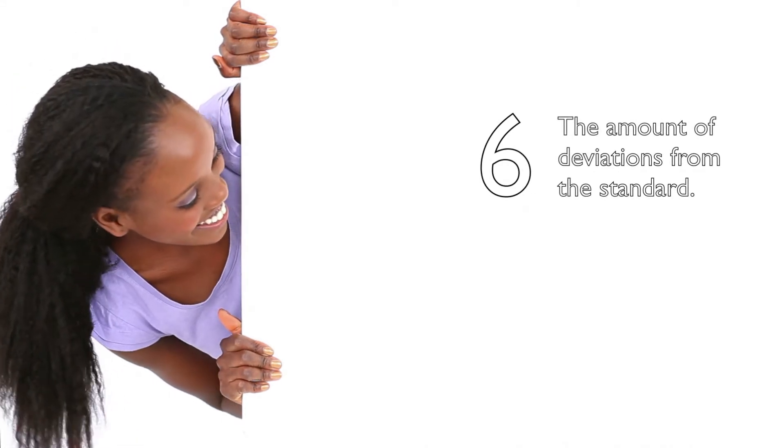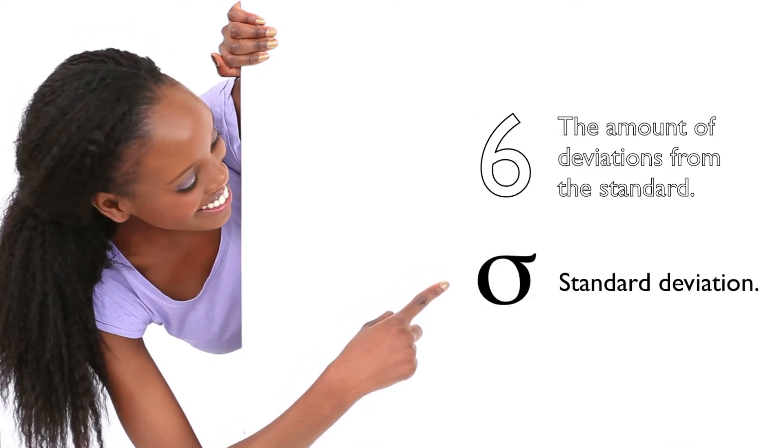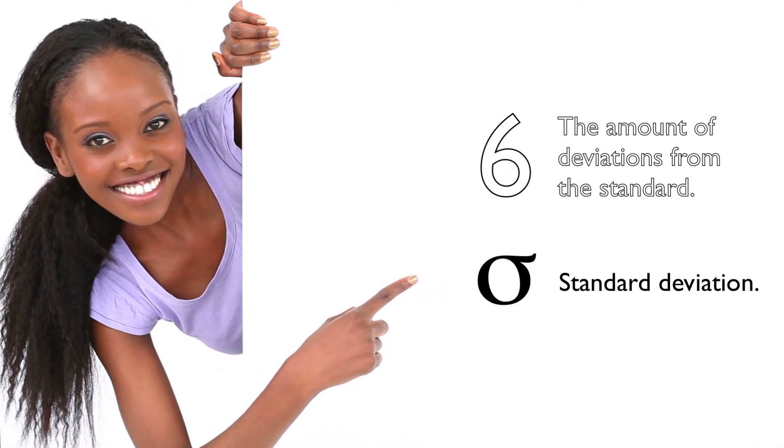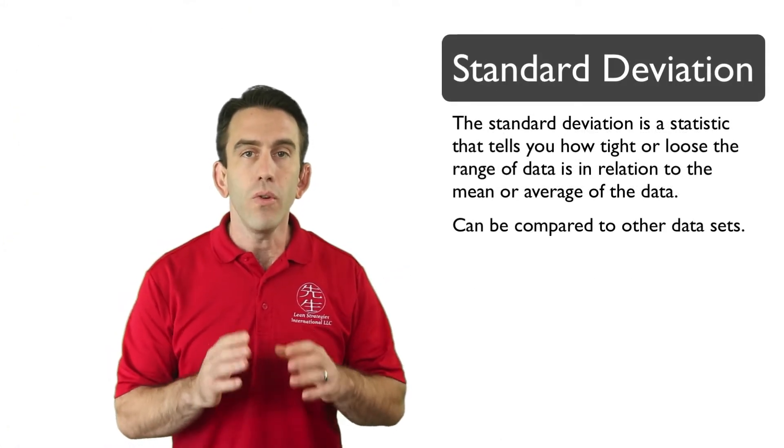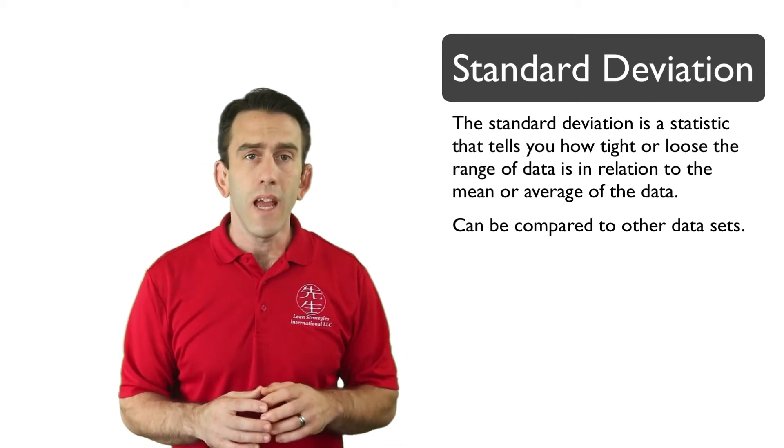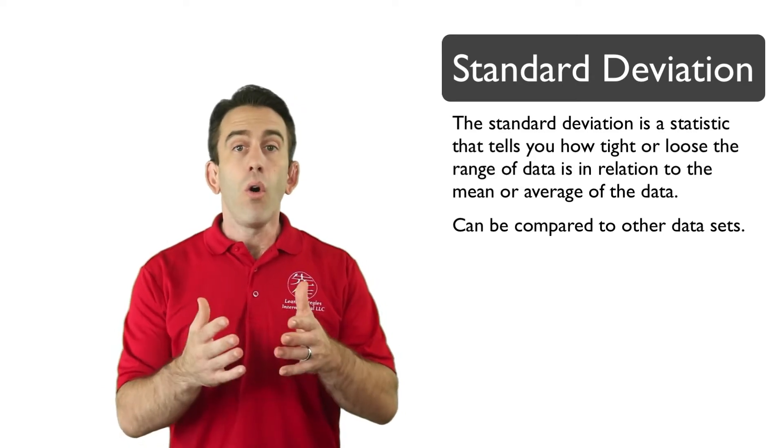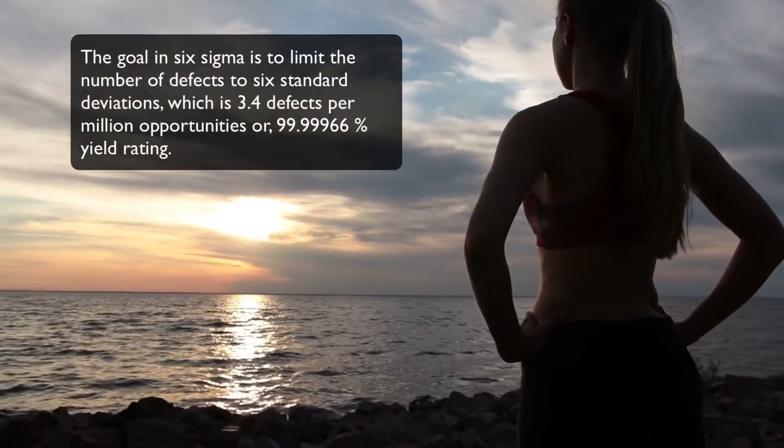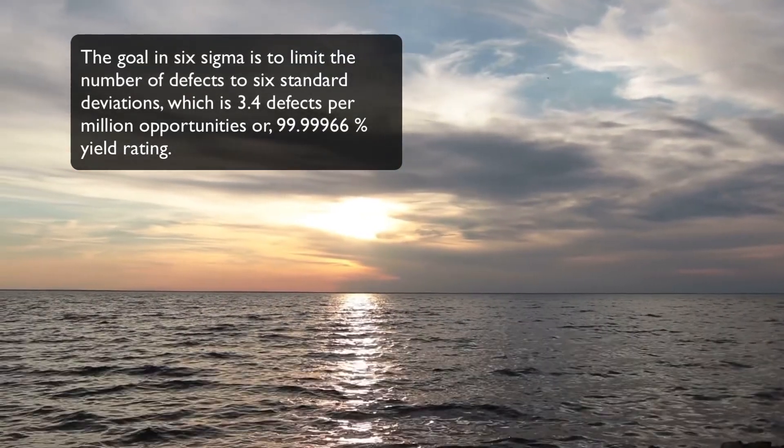You can read the sigma level by looking first at the number, which specifies the amount of deviations from the standard, and the Greek symbol sigma, which translated literally means standard deviation. The standard deviation is referred to as a standard because the percentages of amounts that fall into each deviation are generally the same, which gives us the ability to compare the deviation to other data sets. The goal in Six Sigma is to limit the number of defects or standard deviations, which is 3.4 defects per million opportunities or 99.99966 percent yield rating.